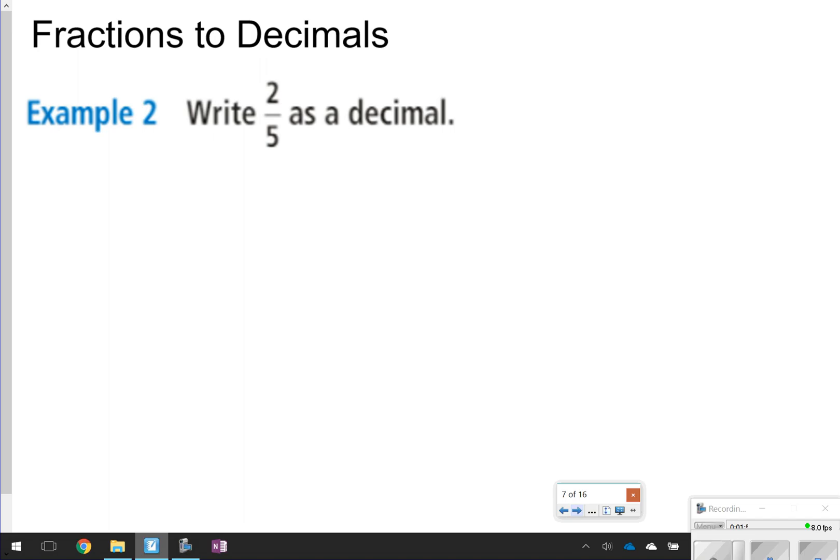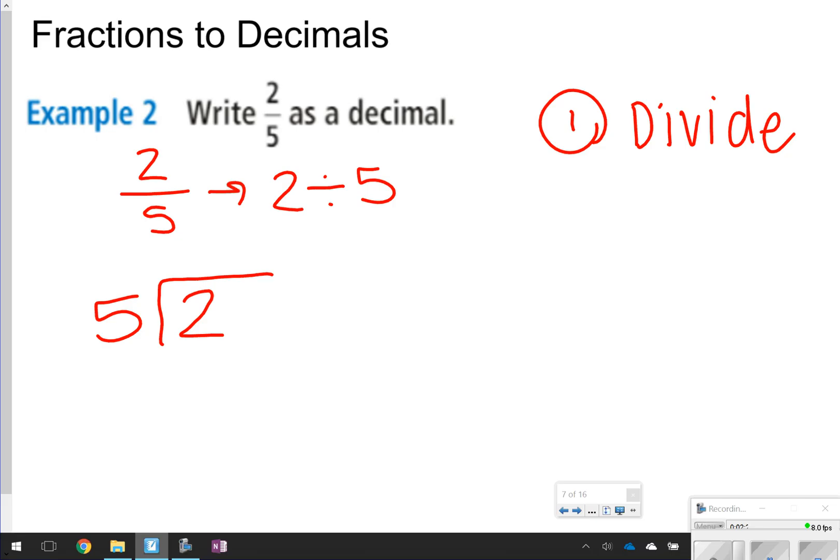The next part of our notes is how to write fractions as decimals. The interesting thing about writing fractions as decimals is there's multiple ways that you can do this. The first way that you can do this is always using division. When you write the fraction 2 over 5, it actually means 2 divided by 5. When you do 2 divided by 5, you're setting up 2 inside the house and 5 on the outside and dividing like normal. 5 goes into 2, 0 times, add a decimal and a 0 so you can actually divide it. 5 goes into 20, 4 times, with nothing left over, so 2 fifths is equal to 0.4.